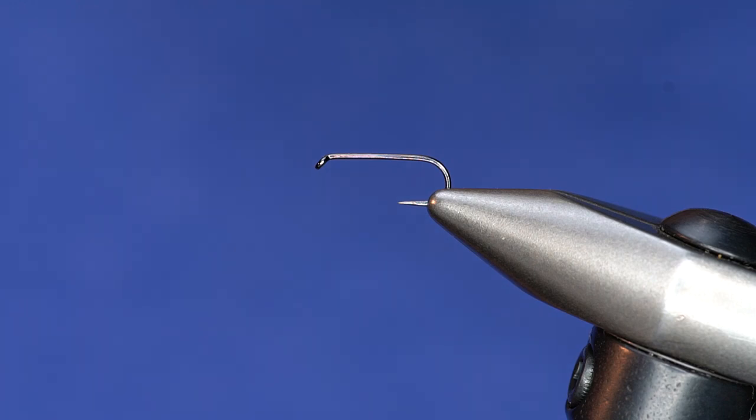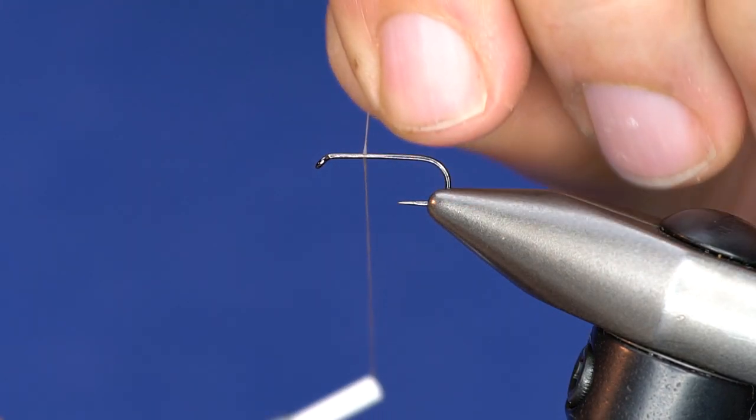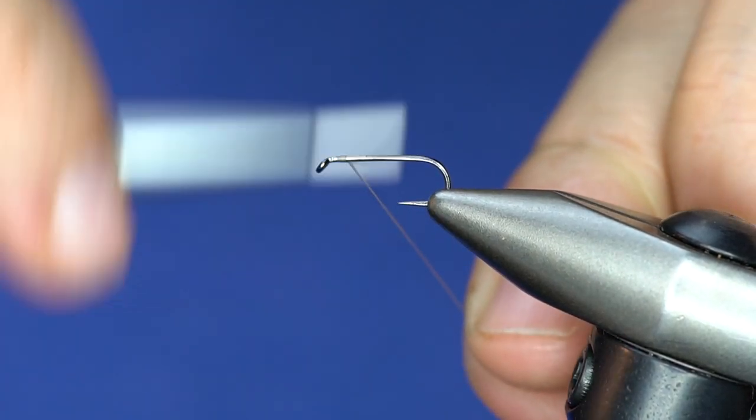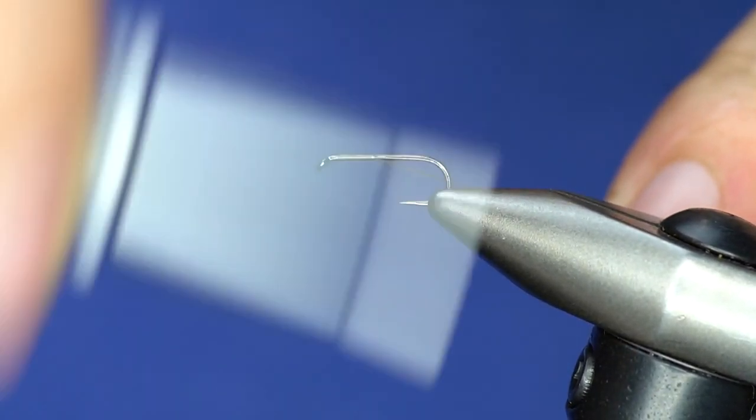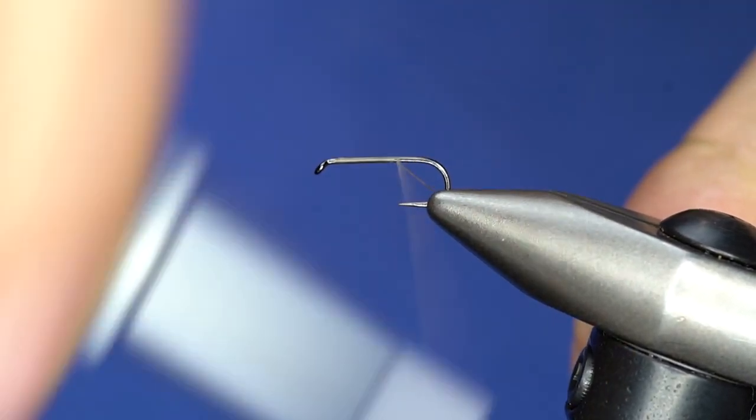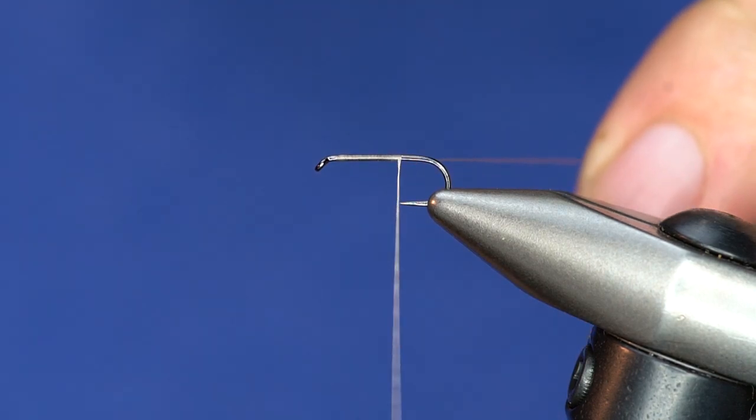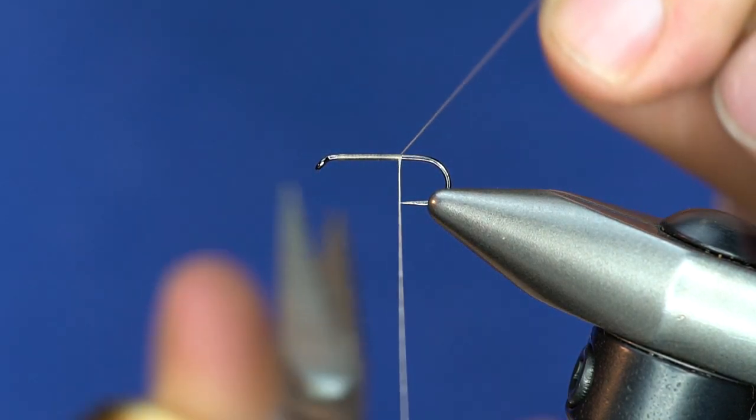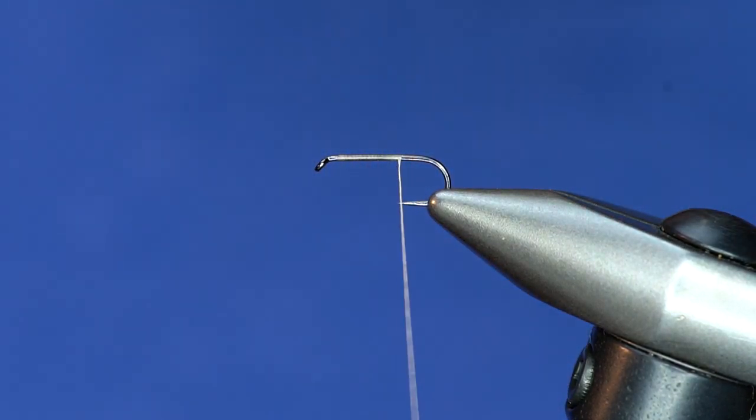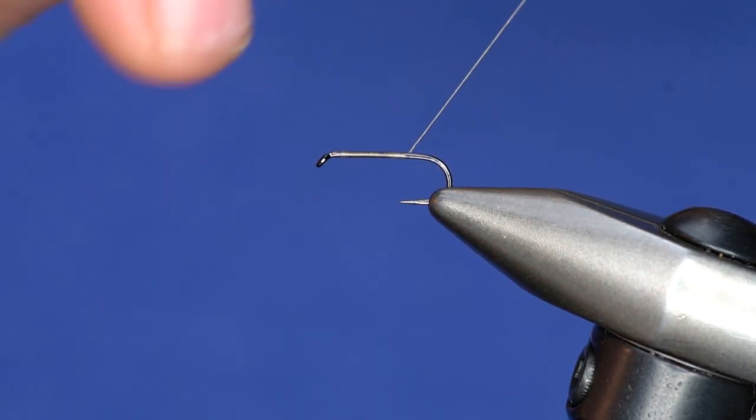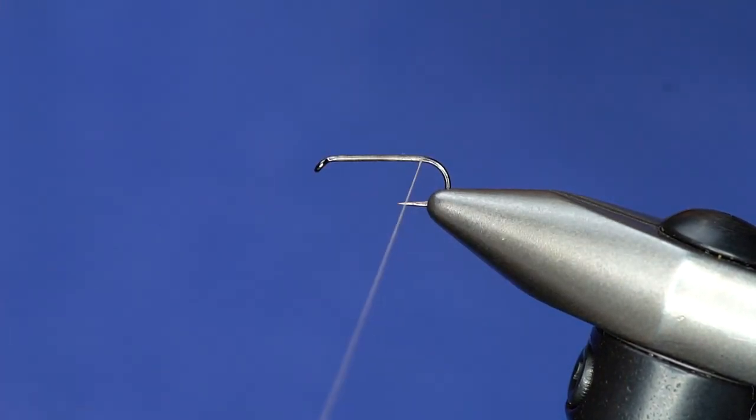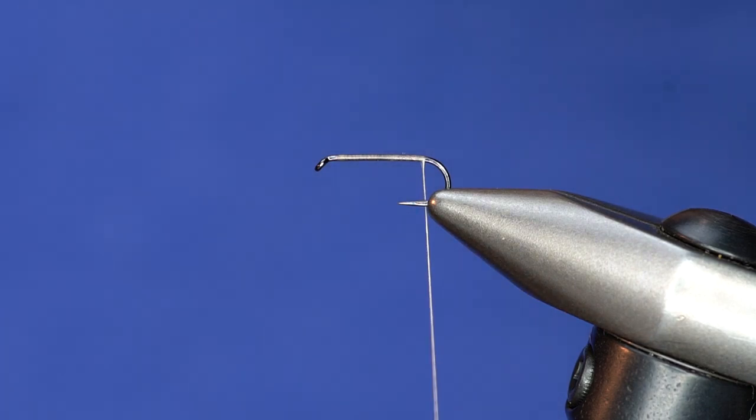So I've got a Fuling Mill Nymph Hook, this is a 35-85 and this is a size 16. So I'm going to start off and dress the hook a little bit, just working back to the bend of the hook. I'm going to tie in some tailing material.